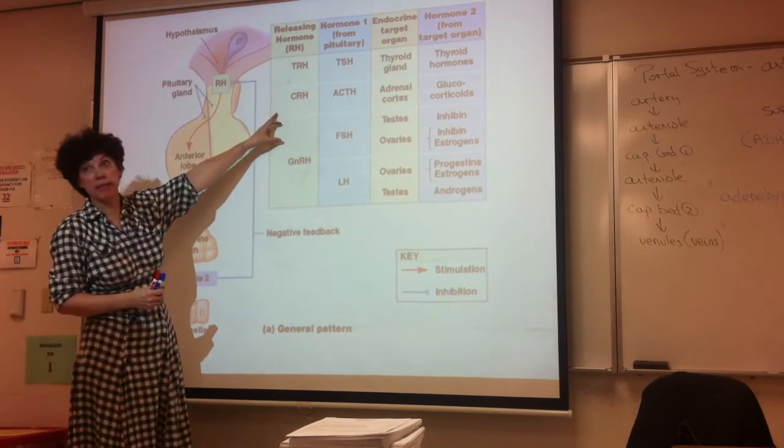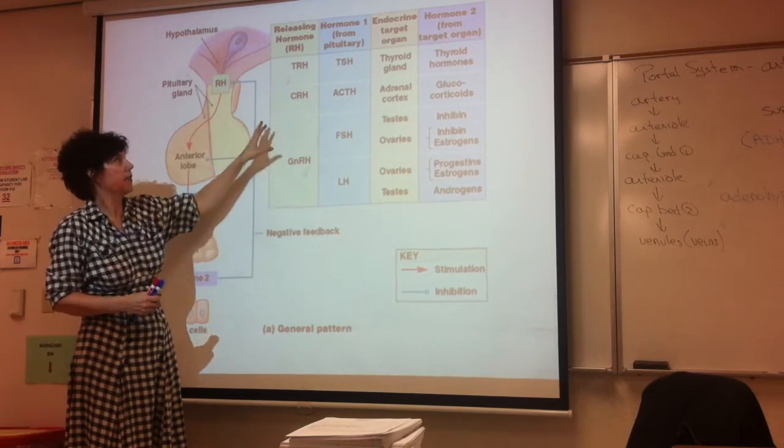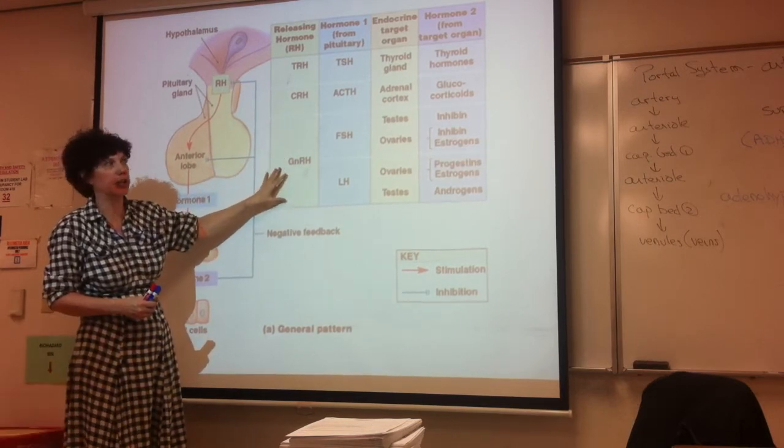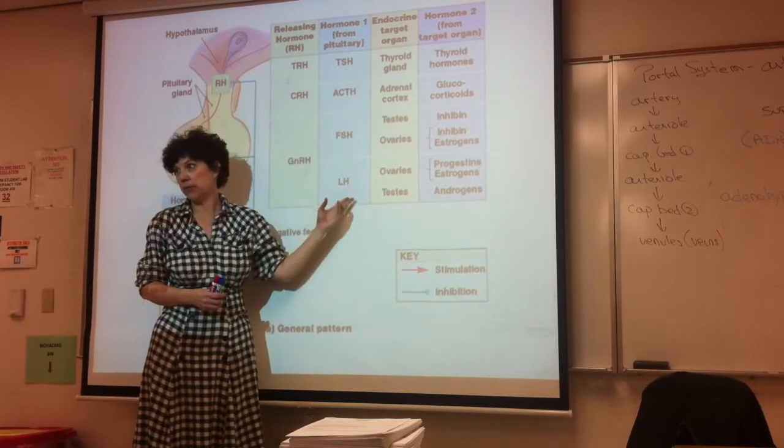Releasing hormones are coming from the hypothalamus. This chart right here is referring to some of the releasing hormones coming from the hypothalamus. There's a few others. And this is what the anterior pituitary is making.